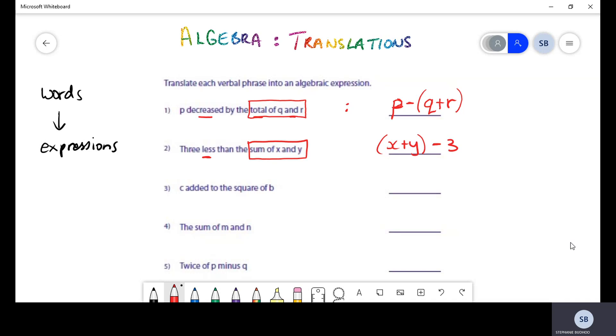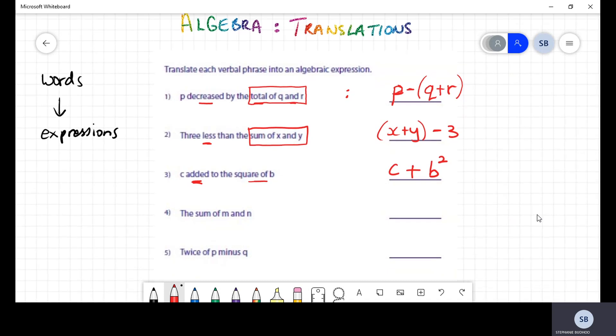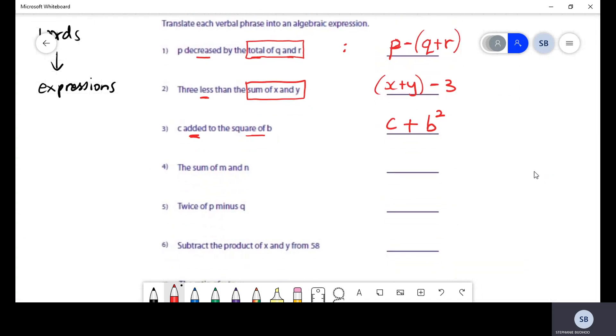Part c, they're saying c is being added to the square of b. So you need to know what the square of b looks like. We're going to add two values here - we're going to add c to the square of b, and the square of b simply is b squared or b to the power of two. Moving on to question four, in question four you can see one of the keywords is the word sum. They're asking us for the sum of m and n, so that signals us to add m and n together. This was a very easy one.